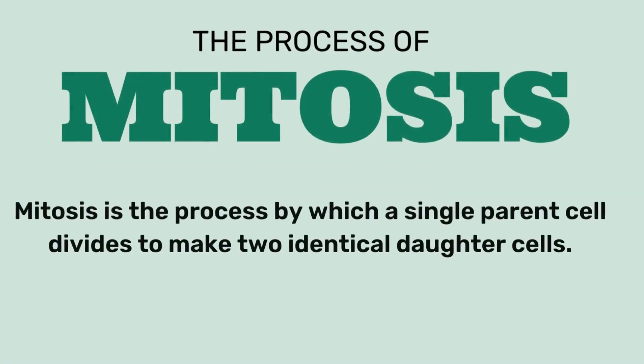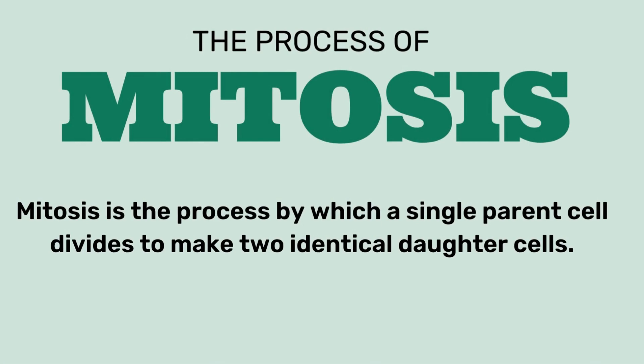Mitosis is the process by which a single parent cell divides to make two identical cells. Basically, mitosis is the process in which we divide a single cell into two cells, which are divided equally into two equal parts.